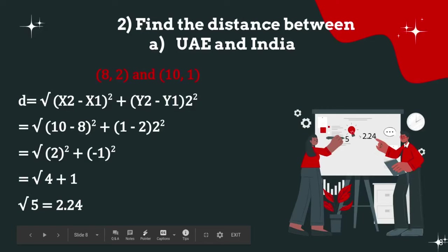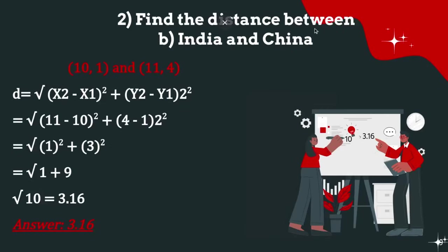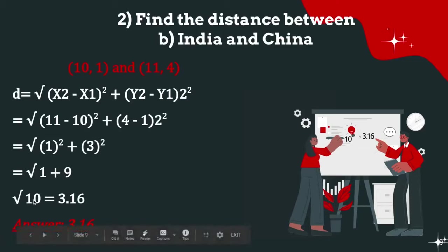Find the distance between India (10, 1) and China (11, 4). Using the distance formula: √((11 - 10)² + (4 - 1)²) = √(1² + 3²) = √(1 + 9) = √10, which equals 3.16.